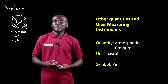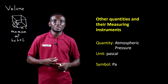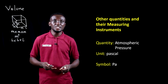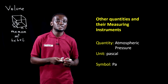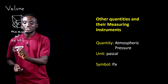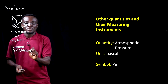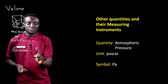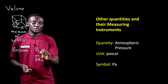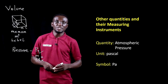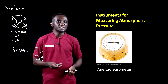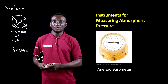Next is atmospheric pressure. The unit for measuring atmospheric pressure is Pascal, and the symbol is Pa — capital P and small a. Under no circumstance should we write it as small p small a, or capital P capital A; those are wrong. The correct form is capital P and small a. The instrument for measuring atmospheric pressure is the barometer — this here is the aneroid barometer.